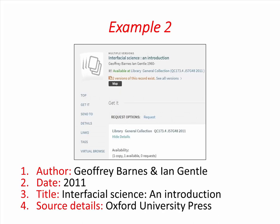Sometimes you will not have the book in front of you. Therefore, look at the library catalogue record. This time there are two authors. Both are included and are in the order in which they appear on the record. The date is found in the publisher field. The title is at the top and has a subtitle indicated by the colon. The publisher name is in the publisher field.